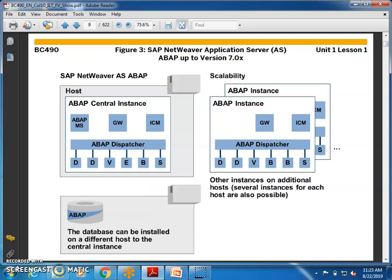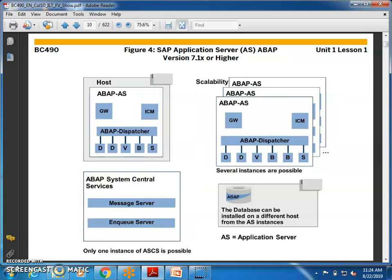Now here we have the NetWeaver Application Server ABAP. AS stands for application server. We have the host, the ABAP instances, and the ABAP database. The dispatcher takes care of all the commands given from the presentation tier and routes them to the work processes. The ABAP dispatcher performs these functionalities. We also have a message server and a unique ENQ server in the ABAP system central service, which connect with the database and respond back.